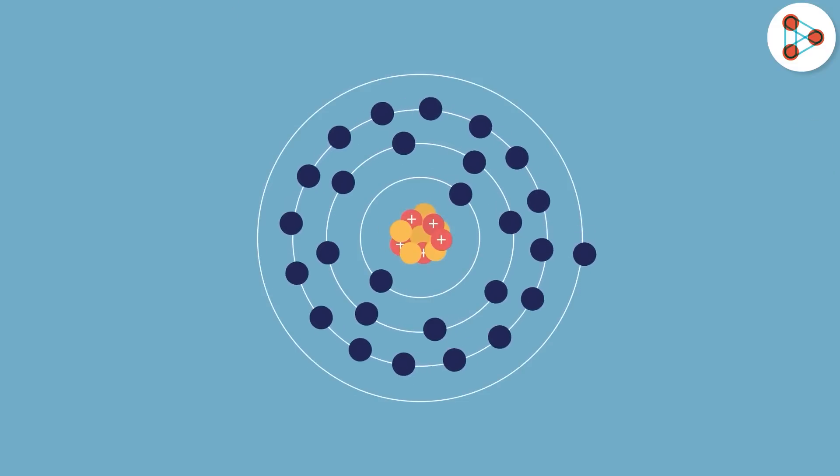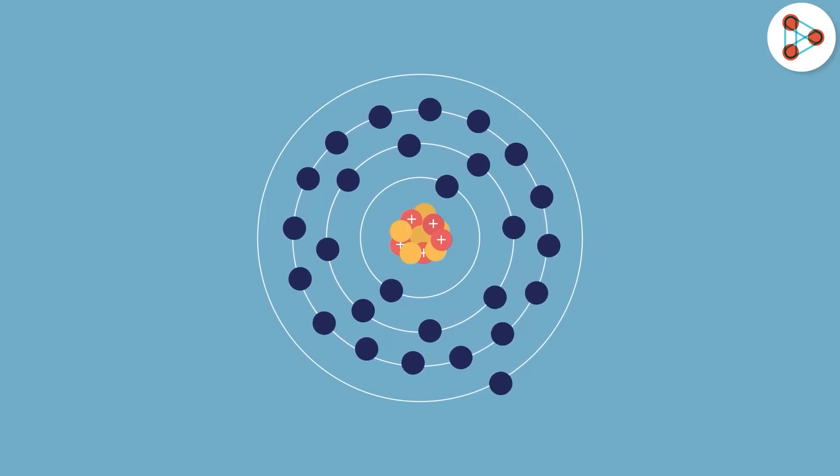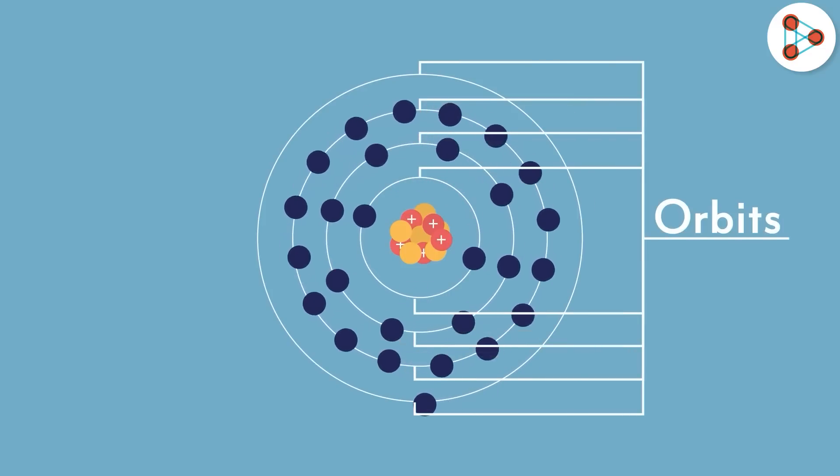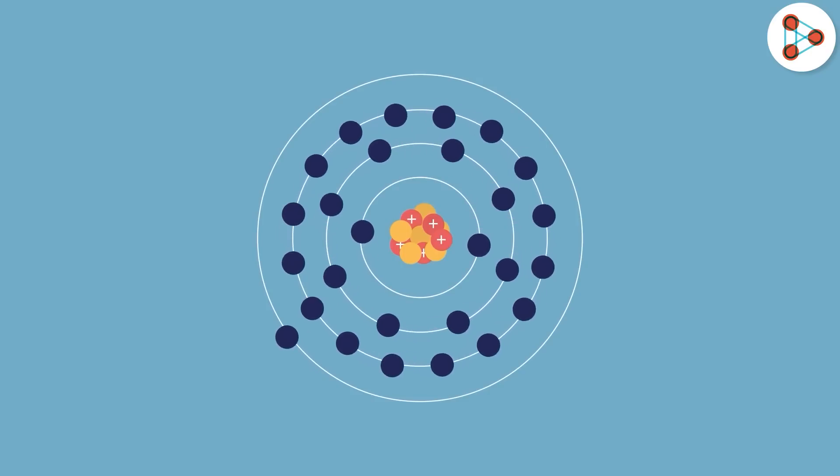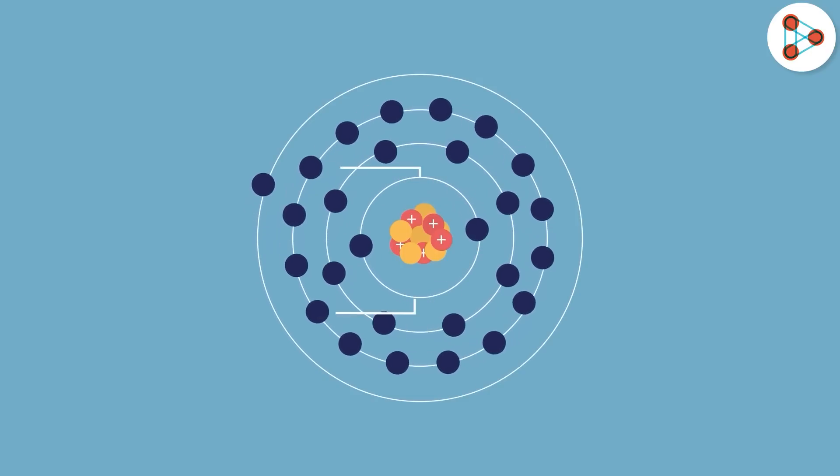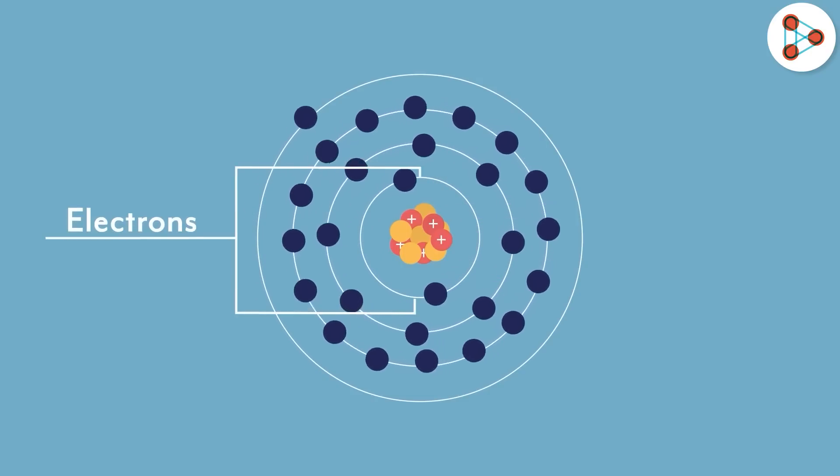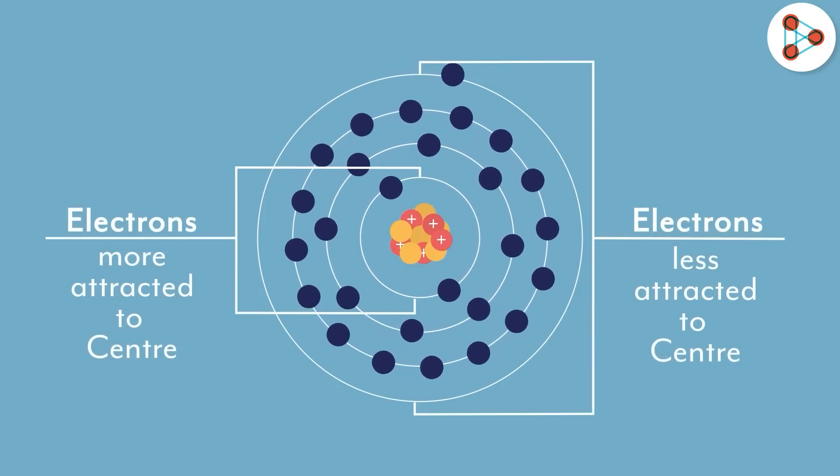The structure of an atom is the perfect way to understand this. It has various orbits which have electrons in it. The charge of protons is what keeps the electrons glued to the atom. And logically, we know that the electrons closer to the nucleus are more strongly attracted to the center as compared to the electrons in the outer orbits.